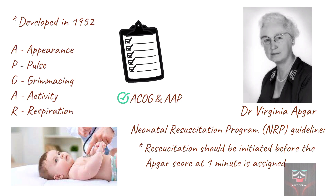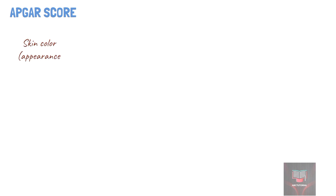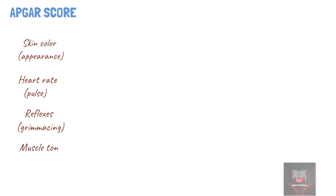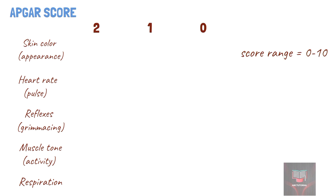The APGAR score comprises five components: color or appearance, heart rate or pulse, reflexes or grimacing, muscle tone or activity, and respiration. Each component is given a score of 2, 1, or 0, which gives a maximum score of 10 and a minimum score of 0.